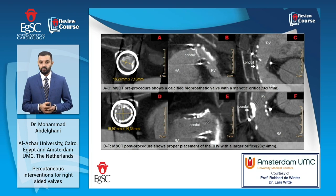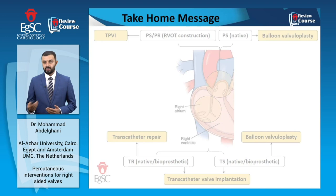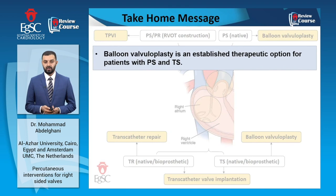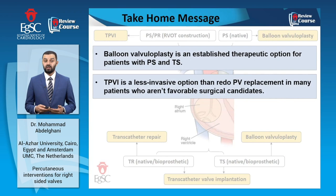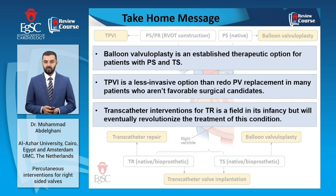To conclude, today we have multiple options to treat right-sided heart valves with transcatheter solutions. Balloon valvuloplasty is the established therapeutic option for patients with pulmonary or tricuspid stenosis. Transcatheter pulmonary valve implantation is an established less-invasive option compared with redo pulmonary valve surgery in many patients who are not favorable surgical candidates. Transcatheter interventions for tricuspid regurgitation is a field in its infancy but will eventually revolutionize the treatment of this condition.